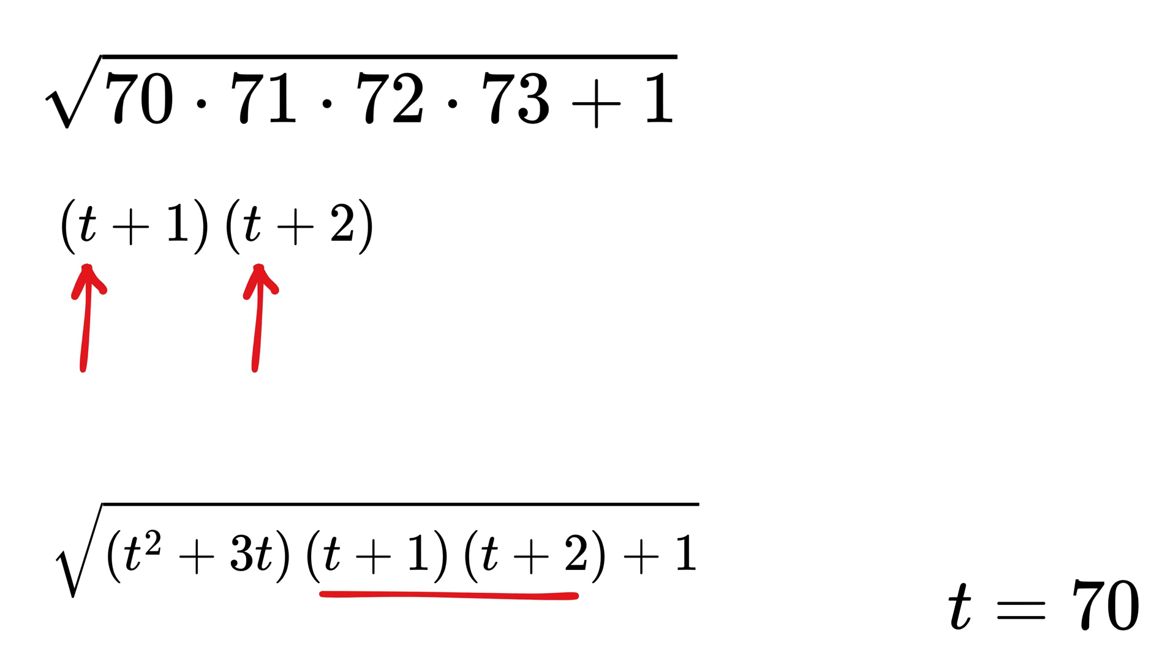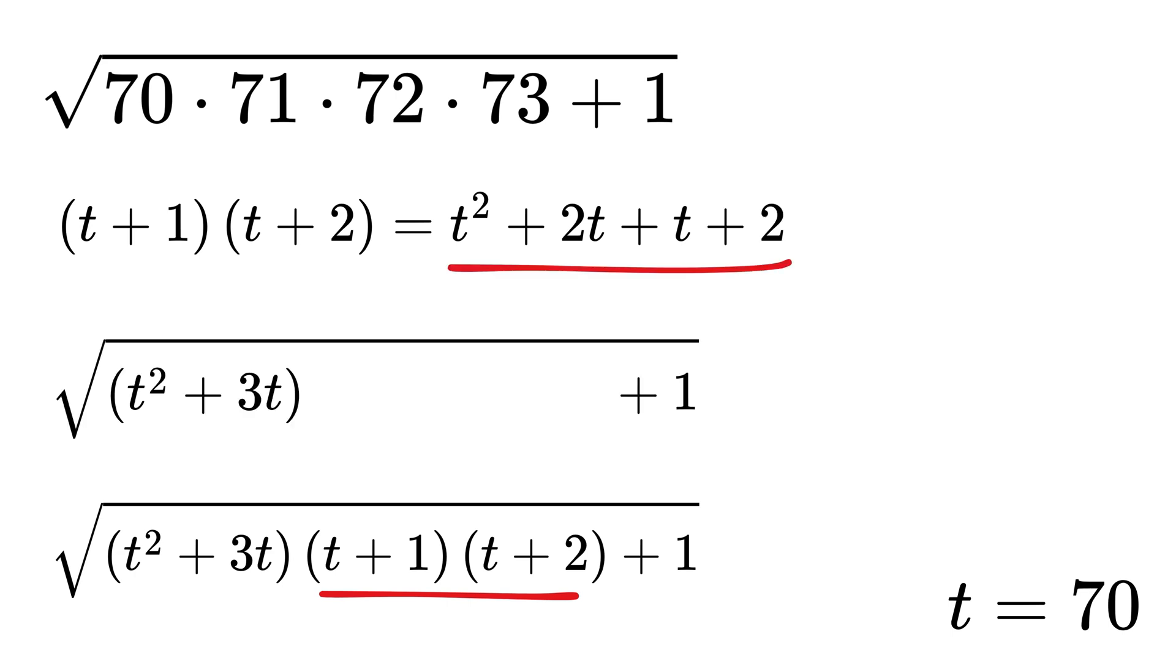Multiply this: t times t is t squared, t times 2 is 2t, 1 times t is t, and 1 times 2 is 2. Add them to get t squared plus 3t plus 2. Let us now make another substitution.